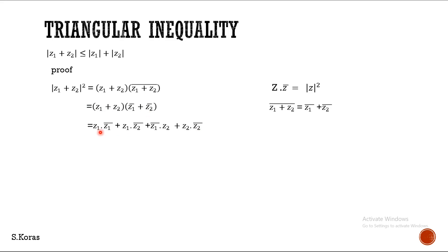Now, Z1 into Z1 bar is in this format — that is, Z into Z bar — which can be written as modulus of Z squared. So, this can be written as modulus of Z1 squared. We came out of the modulus to use the complex number properties, but anyhow we have to go back again to the modulus. Using the property Z into Z bar, that can be converted into modulus of Z squared. So, Z1 into Z1 bar becomes modulus of Z1 squared, and the same way Z2 into Z2 bar becomes modulus of Z2 squared.